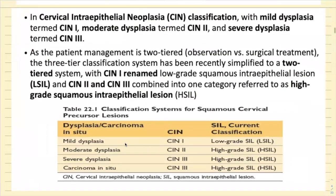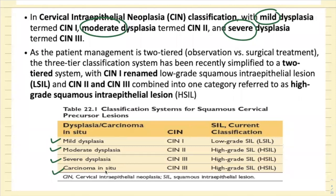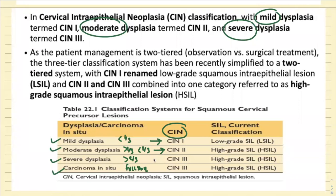In the CIN classification, we had mild, moderate, and severe dysplasia plus carcinoma in situ. Mild dysplasia corresponded to CIN1, moderate to CIN2, severe dysplasia to CIN3, and carcinoma in situ also to CIN3. Mild dysplasia involved less than one-third of the epithelium; moderate, more than one-third but less than two-thirds; severe, more than two-thirds; and carcinoma in situ was full thickness.